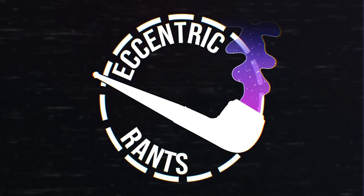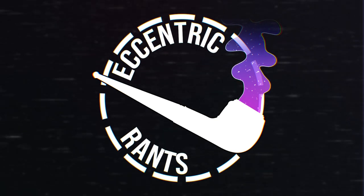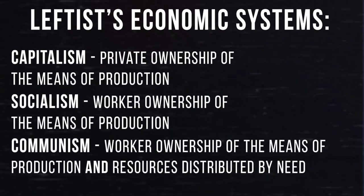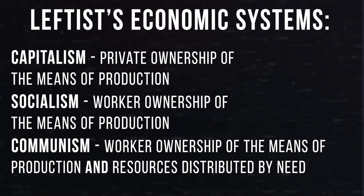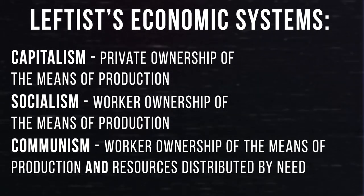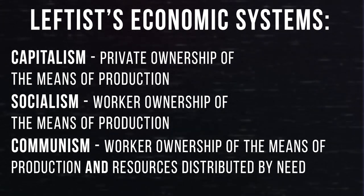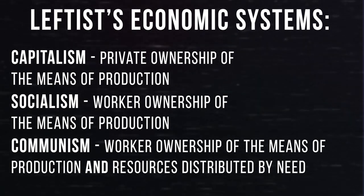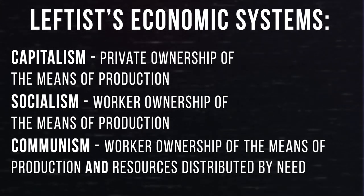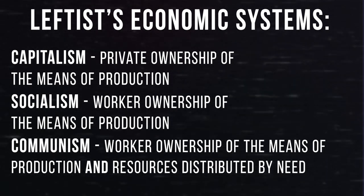As for the left, their definitions of the three economic systems are as follows: capitalism is the private ownership of the means of production; socialism is when workers own the means of production; and communism is when workers own the means of production and resources are entirely distributed based on need. In turn, there is no need for a market economy under such a system. Notice how none of these definitions talk about the state — this is to keep the state separate from economic definitions to keep them more accurate.